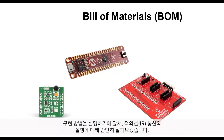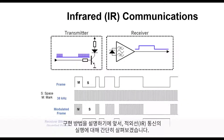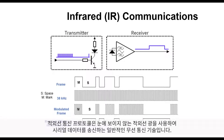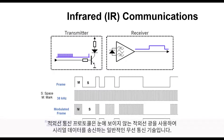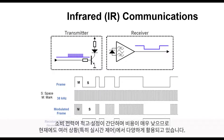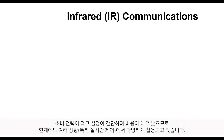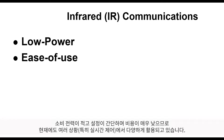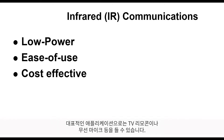Let's briefly review how infrared communications, or simply IR comms, works before we get started. Infrared communication protocols are a common wireless communications technology that involves sending serial streams of data through the manipulation of non-visible infrared light. It's still used in a variety of situations, particularly in real-time control applications since it's low power, easy to set up, and extremely cost effective. Typical applications include things like television remotes and cordless microphones.